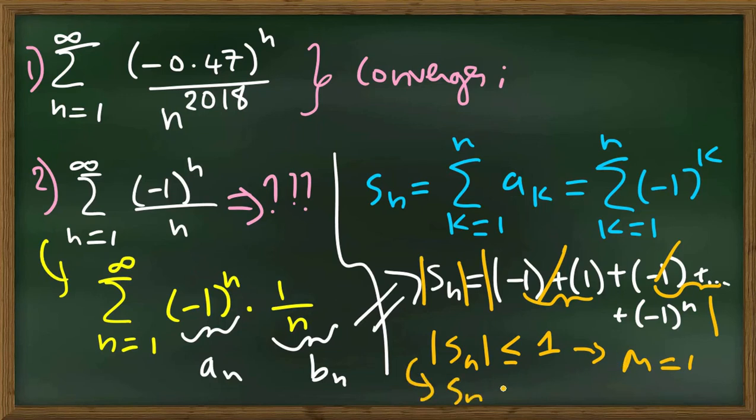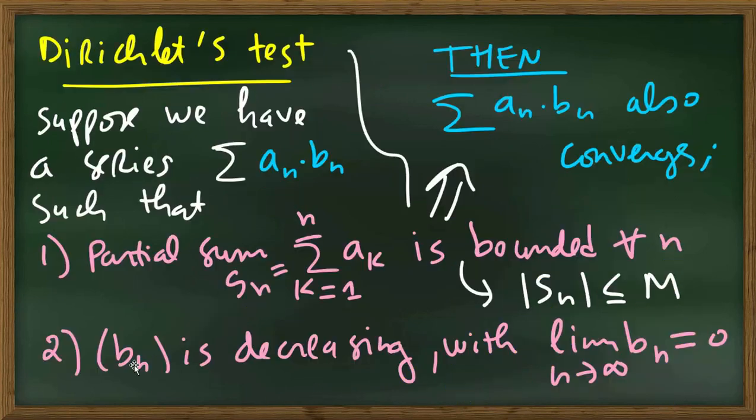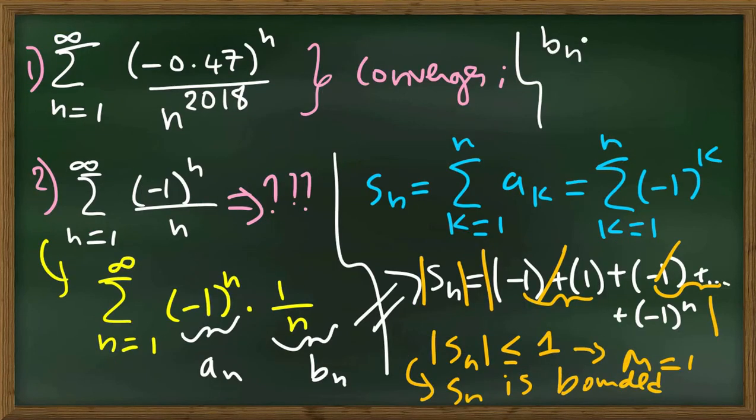Now, we need to show that b_n is decreasing and the limit of b_n is 0. b_n is 1 over n. The derivative of 1 over n is minus 1 over n squared.